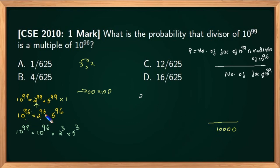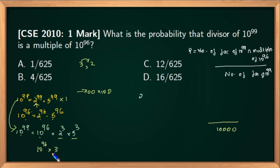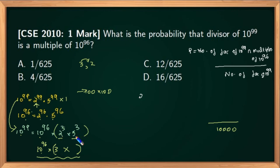Now 10 raised to 96 is 2 raised to 96 into 5 raised to 96, and I can also write 10 raised to 99 as 10 raised to 96 into 2 raised to 3 into 5 raised to 3. The question is: I want to find those multiples of 10 raised to 96 which are also divisors of 10 raised to 99. For example, 10 raised to 96 into 3 is a multiple of 10 raised to 96, but it is not a divisor of 10 raised to 99 because 3 is not a factor of 10 raised to 99.